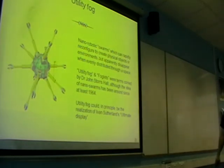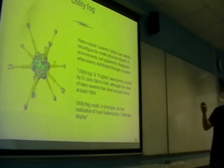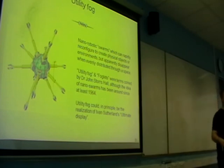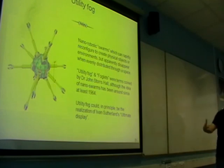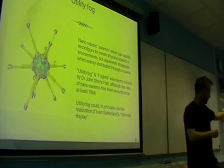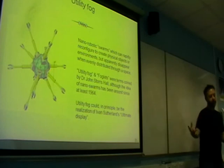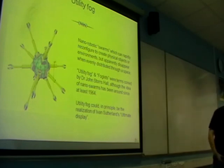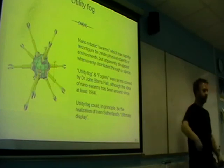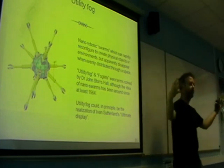So utility fog - we already talked about this a fair bit. This is an idea named by Dr. John Storrs Hall. We've got these distributed nanobots that can lock into different configurations and be useful in some way. A lot of people see them as a way of creating something like the holodeck out of Star Trek - real objects suddenly appearing around you to use, then dissolving when they're more than a certain distance away. They could also be used to effectively create screens so that you see a full virtual environment.